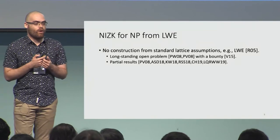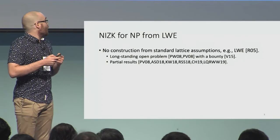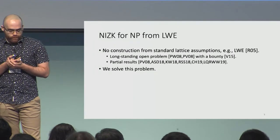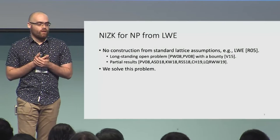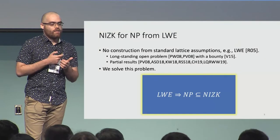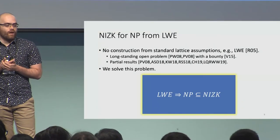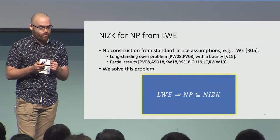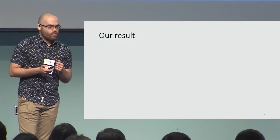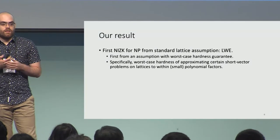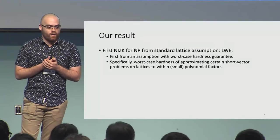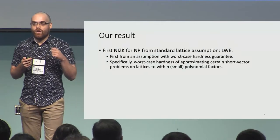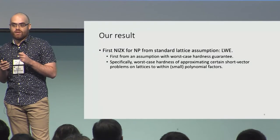Through the years there have been many attempts and partial results. Finally, in this work, we resolve this problem and show that assuming LWE, every NP language has a NIZK system. We build the first NIZK system for all of NP from standard lattice assumptions. This is in fact the first NIZK system for all of NP from any assumption with worst-case hardness guarantee, based on the worst-case hardness of approximating certain short vector problems on lattices within polynomial factors.